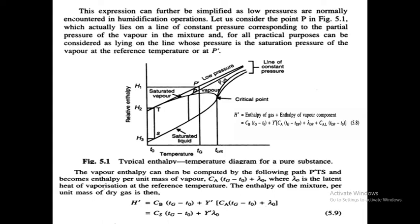We are considering only the reference temperature. Instead of Tdp, we use the reference temperature. λ0 is the latent heat of vaporization at the reference temperature. Taking the common term (Tg - T0) outside: H' = Cb(Tg - T0) + Y'·Ca(Tg - T0) + Y'·λ0.